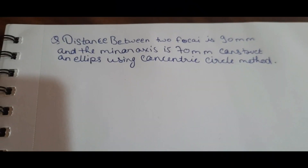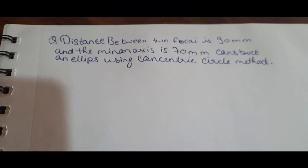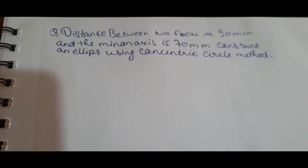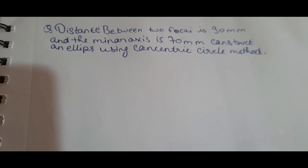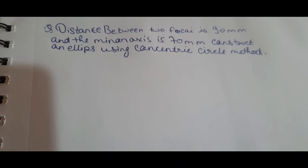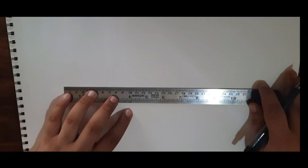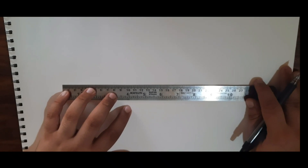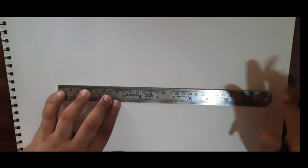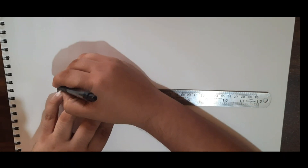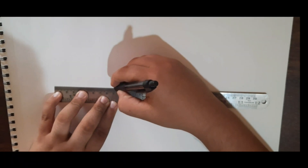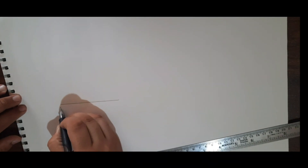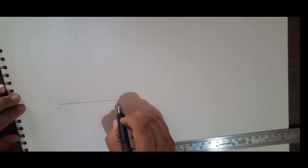The question is: distance between two foci is 90mm and the minor axis is 70mm. Construct an ellipse using the concentric circle method. As given in the question, we will make a line of 90mm which is equal to 9cm. This is F1 and F2.